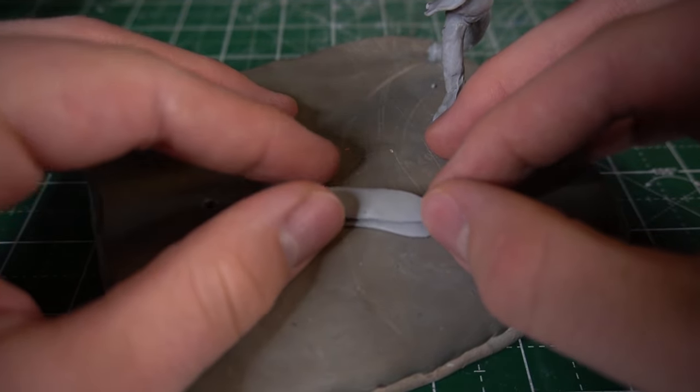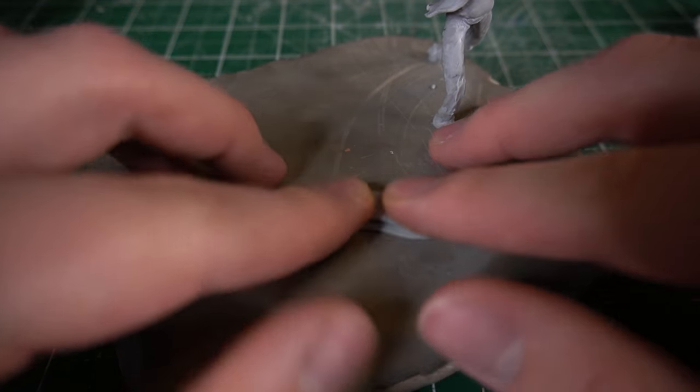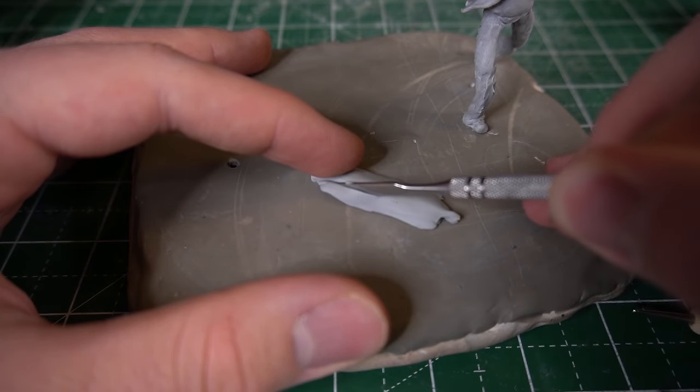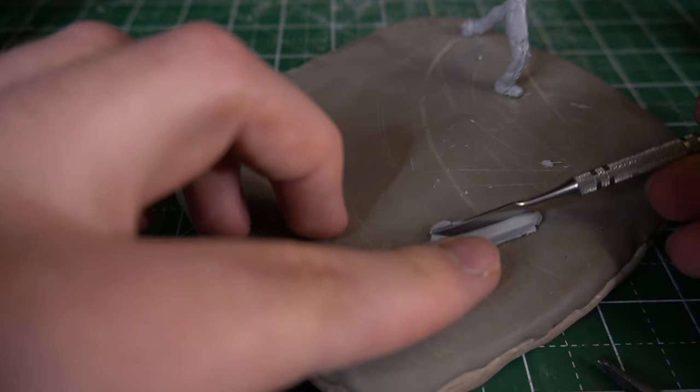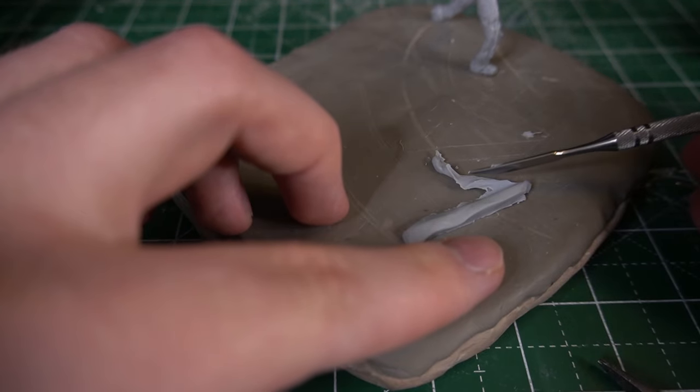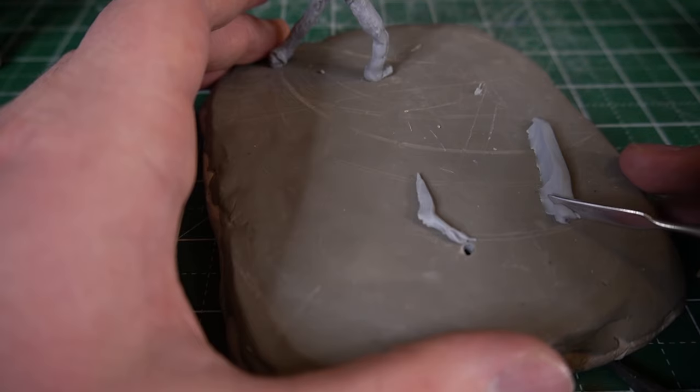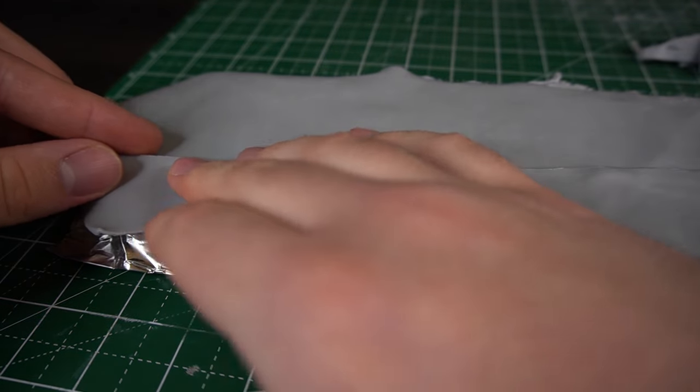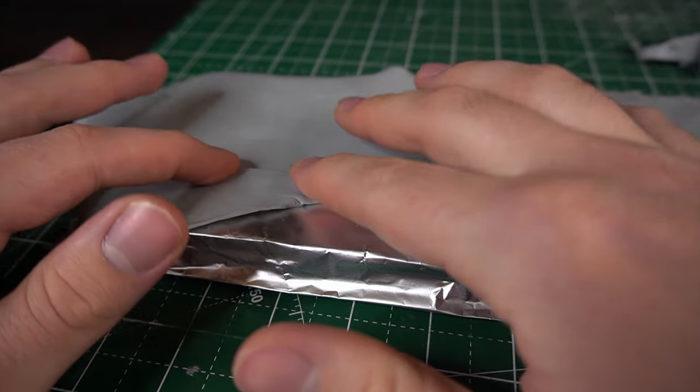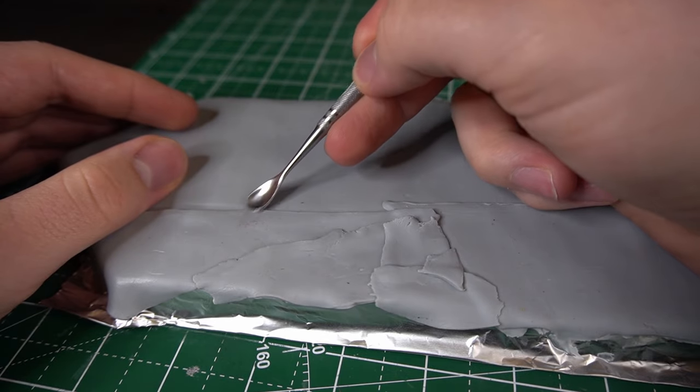I sandwich a piece of armature wire between two sheets of clay. And then I begin to carve it into a sword shape. This will be Percy's sword riptide. Percy and the Chimera need a platform to square off on. The base of this platform is a piece of foam that I've carved to the shape I want.